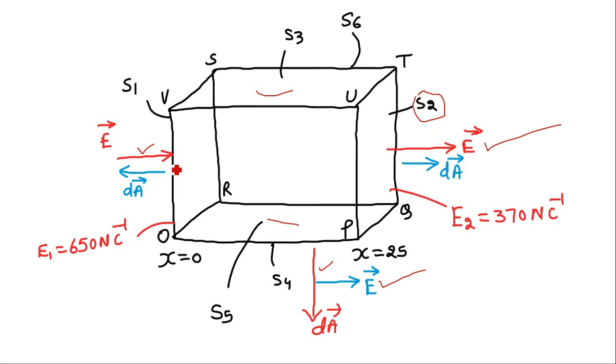However, for the face S1, the electric field is directed toward plus x-axis and the area vector is directed toward minus x-axis because area vector has to be directed toward the outward normal. So here the angle between electric field and area vector is 180 degrees.